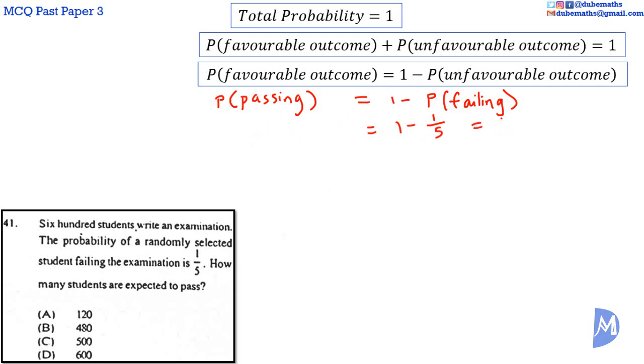Of course, 1 is the same as 5 over 5. So we have 5 over 5 minus 1 over 5. 5 minus 1 is equal to 4, 4 over 5. So the probability of a randomly selected student passing the exam is 4 fifth.